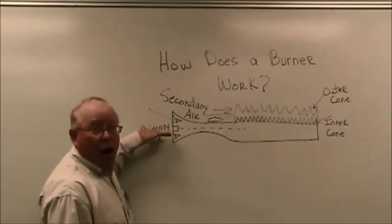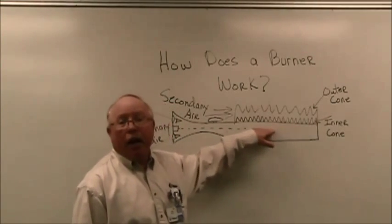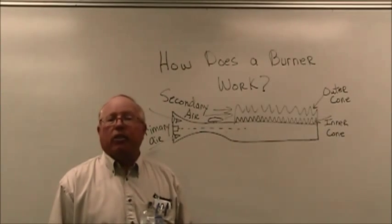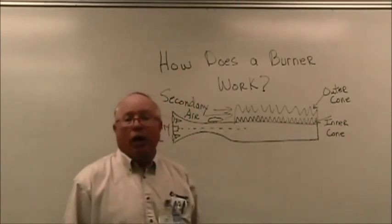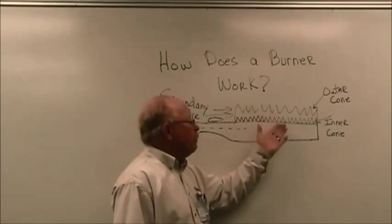The air and the gas travel through the venturi throat and into the mixing chamber. Here, the gas and the air are going to be mixed together thoroughly, and then they're distributed evenly through the ports of the burner. An ignition source lights off the gas, and then the gas burns.